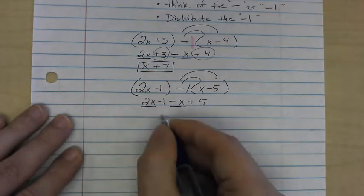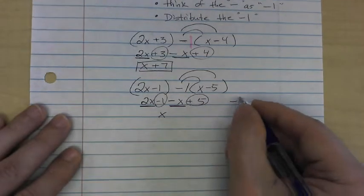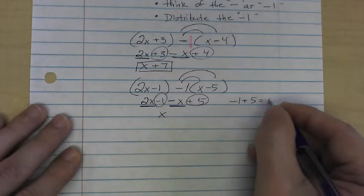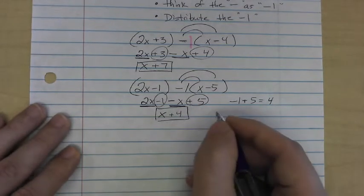And now I have 2x minus an x. That leaves 1x. I have negative 1 plus 5. So in a calculator, if you were to type in negative 1 plus 5, you would end up getting a positive 4. So we just write the positive 4, and there's our answer.